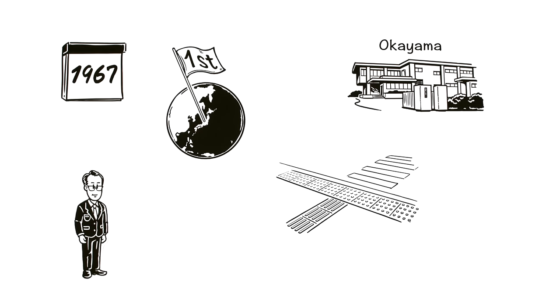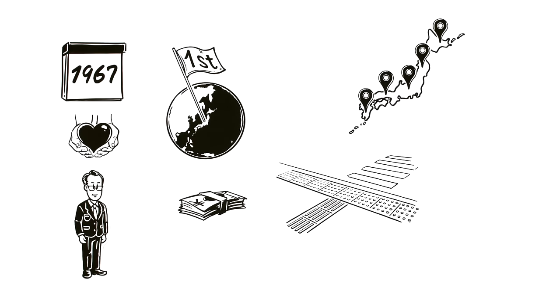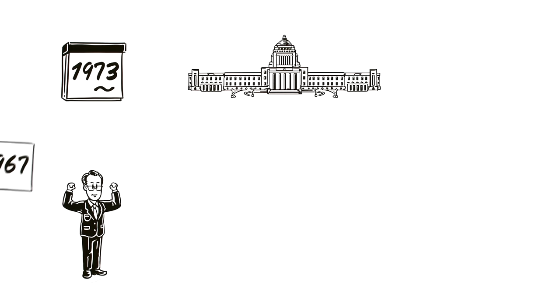Miyake then donated his own funds to help other communities around Japan install the tiles. The government recognised the value of his invention and from 1973 began installing the blocks nationwide.